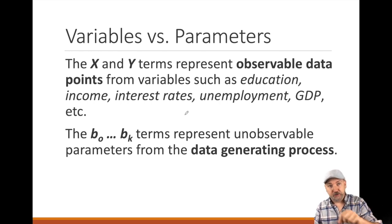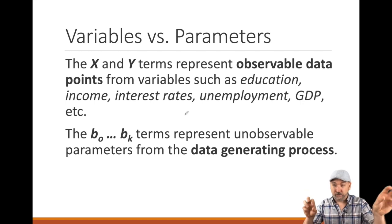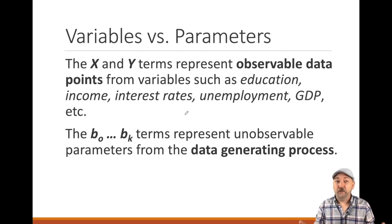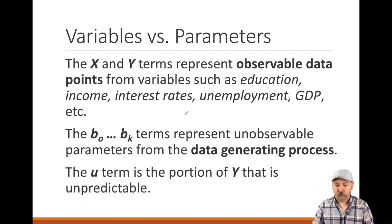Whereas the B0 through BK, those are the unknown parameters. We believe that they exist, that there is a way in which x affects y. We just don't have numbers to plug in quite yet for what those values are. Variables, observable data, x and y, parameters, the Bs in the model, are unobservable, unknown relationships in that data generation process.